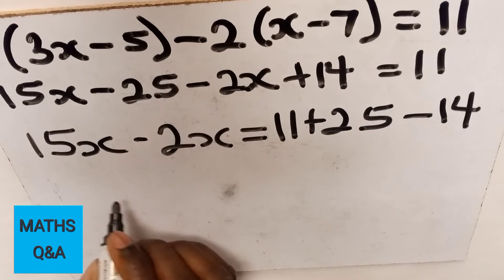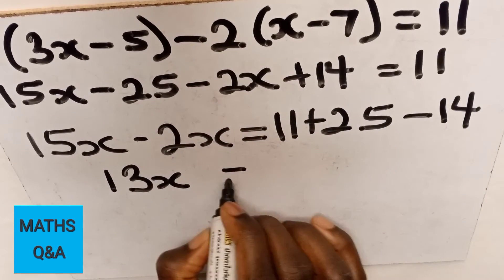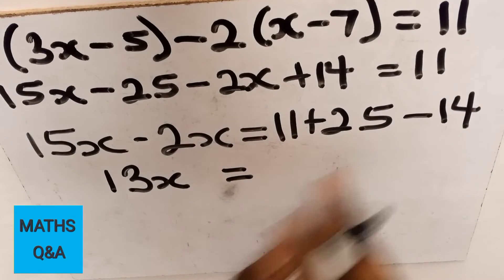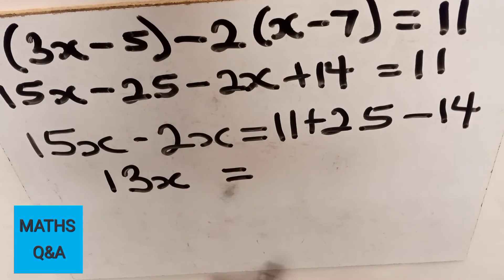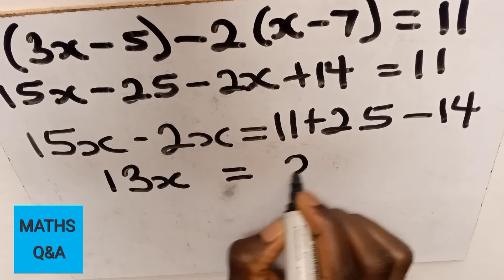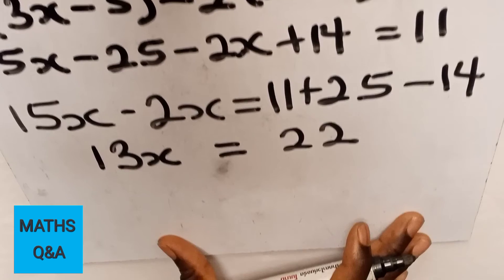So 15x minus 2x gives 13x equal to 11 plus 25 gives 36 minus 14 gives 22.